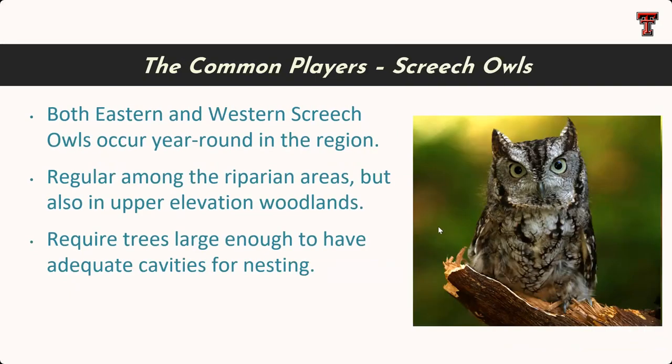Getting into some of the nocturnal birds — the screech owls. Both eastern and western screech owls occur in the Trans-Pecos. They are regular occupants of the riparian areas, but also occupy upper elevation oak woodlands and even pine woodlands. They're restricted by needing trees large enough to have adequate cavities for nesting, as they too are cavity nesters.